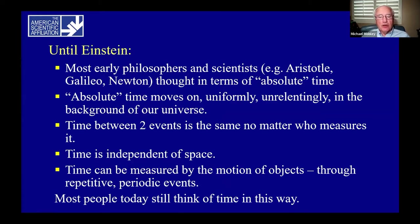Until Einstein, most early philosophers, such as the early Greeks and Aristotle, and early scientists, Galileo and Newton, thought of time in terms of absolute or universal time. This absolute time moves on uniformly, unrelentingly in the background of our universe.